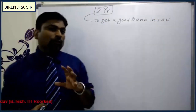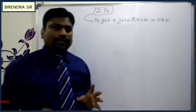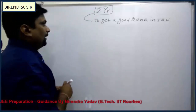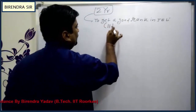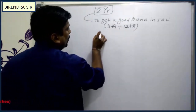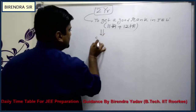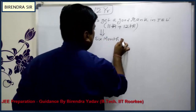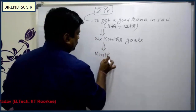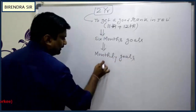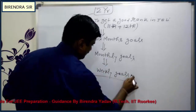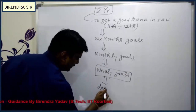Write that target in your diary; you can write a specific rank if you have an expectation. Now, divide that goal. Your goal is to cover the 11th and 12th syllabus. Divide this 2-year goal into 6-month goals, then into monthly goals, then into weekly goals, and weekly goals into daily goals.